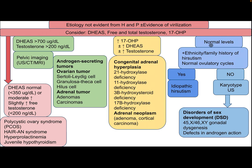If values are normal, with or without family history or ethnicity of hirsutism and a normal ovulatory cycle, this is idiopathic hirsutism. If these are not present, the patient needs karyotype and ultrasound; differential diagnosis includes disorder of sex development (DSD), 45X/46XY gonadal dysgenesis, and defects in androgen action.